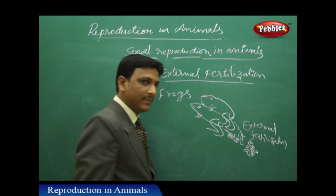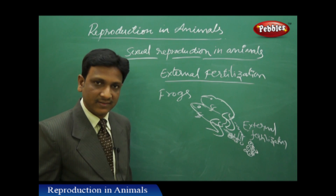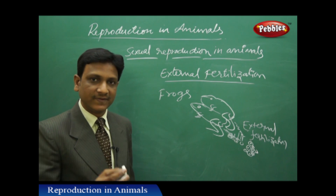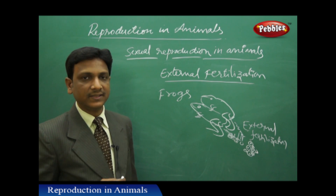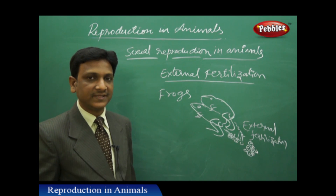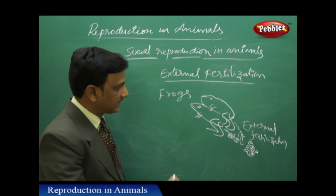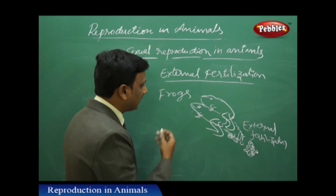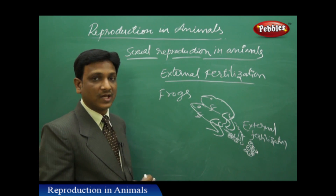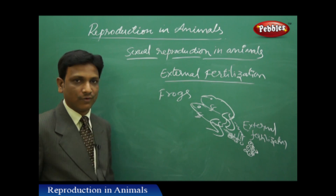In mammals, after fertilization, the zygote is taken care of inside the body — converted to embryo, embryo to fetus, fetus to a complete baby, which then takes birth. Complete care and protection is given inside the body of the female. But let us now see how, in the case of frogs, the zygotes are developed into young ones. Let us look at the life cycle of the frog.